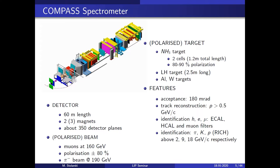COMPASS is a fixed-target detector. The target is upstream, the beam comes from one side, the detector is around 60 meters in length, with magnets shown in red. There are about 350 detector planes and 12 different types of tracking detectors. One key feature of COMPASS is that we can have both muon beams and hadron beams, with polarization around 60 percent.